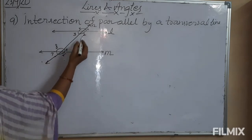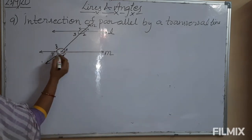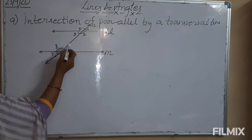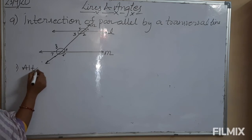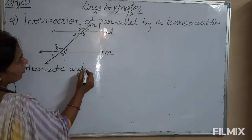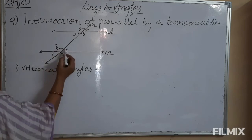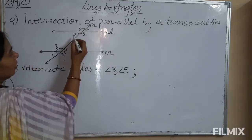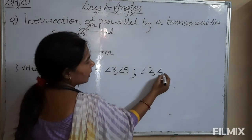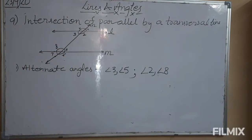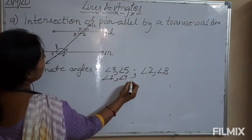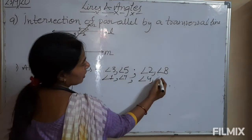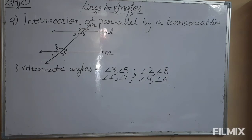Angles 3, 5 and angles 2, 8 are alternate interior angles, because they lie between the parallel lines. Similarly, angles 1, 7 and angles 4, 6 are also alternate interior angles. So four pairs of alternate angles are formed. Second type is corresponding angles — angle 1 and angle 5 are corresponding, angle 4 and angle 8 are corresponding, angle 2 and angle 6 are corresponding, and angle 3 and angle 7 are corresponding.